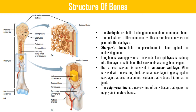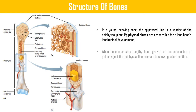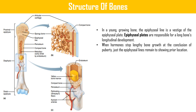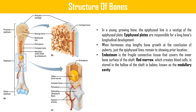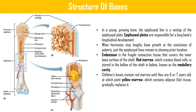The epiphyseal line is a narrow line of bony tissue that spans the epiphysis in mature bones. In a young growing bone, the epiphyseal line is a vestige of the epiphyseal plate. Epiphyseal plates are responsible for a long bone's longitudinal development; when hormones stop lengthy bone growth at the conclusion of puberty, just the epiphyseal line remains to show the prior location.